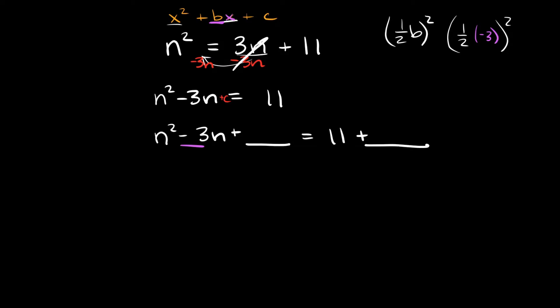(-3/2)² = 9/4, because you apply the exponent to both numerator and denominator: 3² = 9 and 2² = 4. A negative squared is positive, so our answer is positive 9/4. Plug 9/4 into both blank spaces.